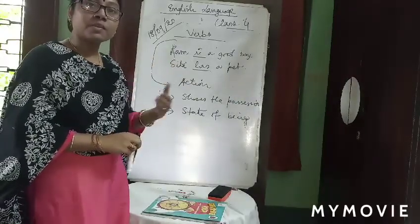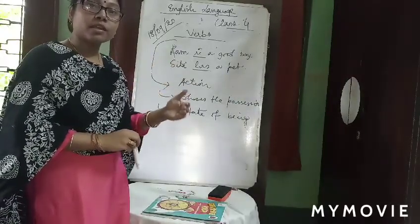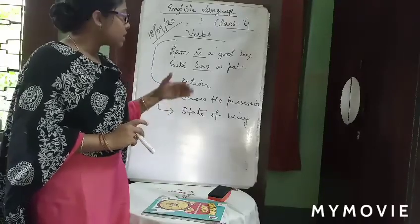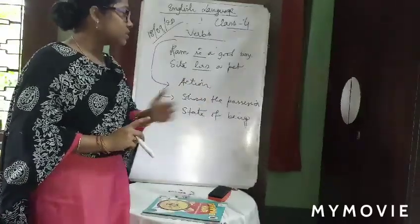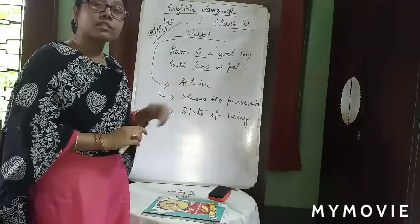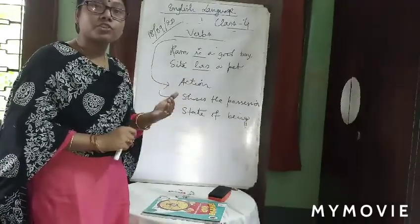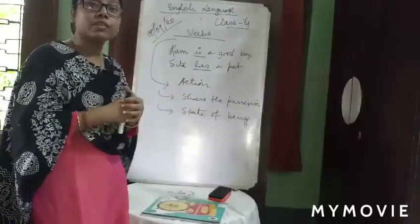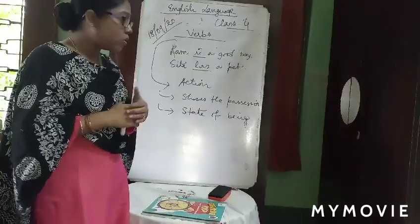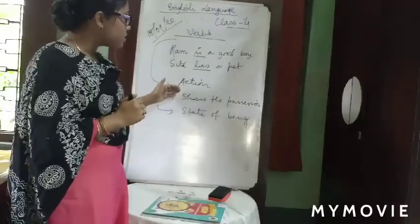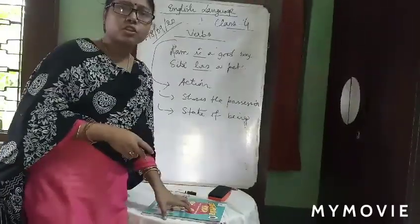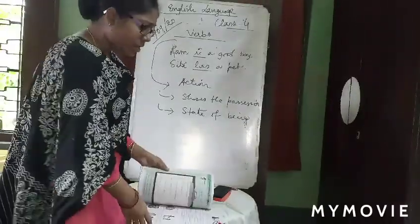Ram is a good boy — it is showing a state of being. Secondly, Sita has a pet — it shows possession, something Sita is having with herself. So this is actually verb. So I have given a general introduction of verb.